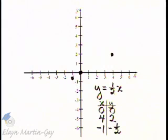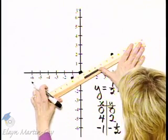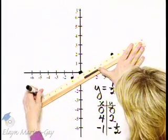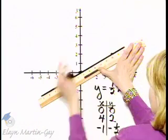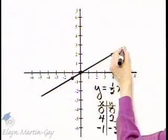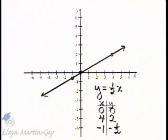Now, if these three ordered pair solutions are correct, the three points we graph should all lie on the same line. Notice they do. The line through them is the graph of y equals one-half x, and it continues indefinitely in both directions. There's the graph.